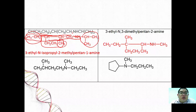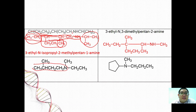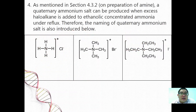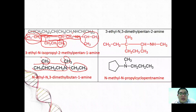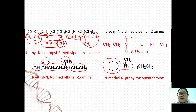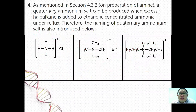For tertiary amine examples: the longest chain is 4 carbons, giving butan-1-amine as the parent. With a methyl, another methyl, and an ethyl on nitrogen, the name is N-ethyl-N,3-dimethylbutan-1-amine. Finally, with a cyclopentane ring as parent — cyclopentan-1-amine — and a methyl and a propyl on nitrogen, the name is N-methyl-N-propylcyclopentan-1-amine.